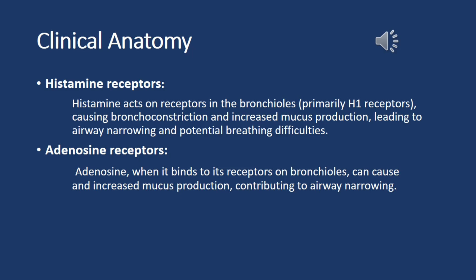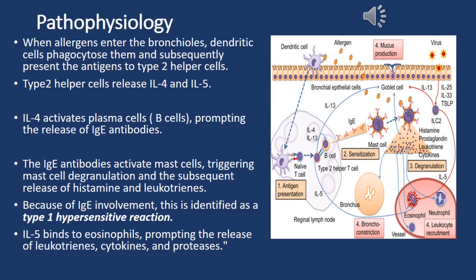Adenosine receptors: adenosine, when it binds to its receptors on bronchioles, can cause bronchoconstriction and increased mucus production, contributing to airway narrowing. When allergens enter the bronchioles, dendritic cells phagocytose them and subsequently present the antigens to type 2 helper cells.